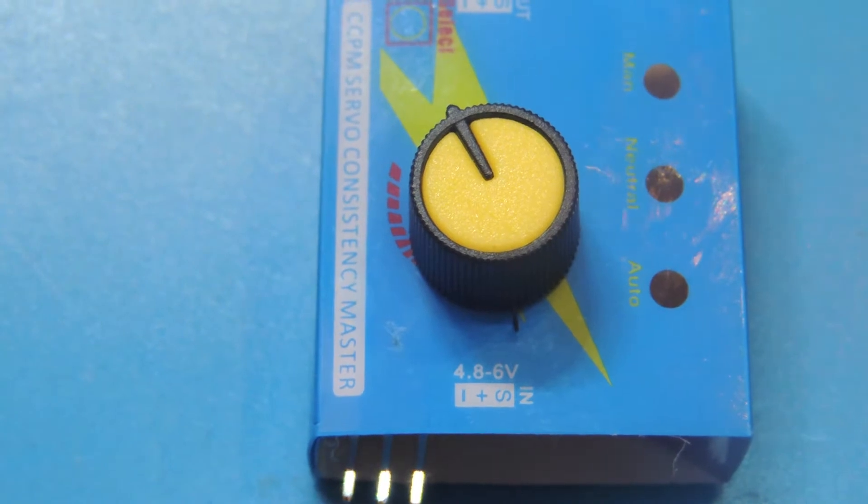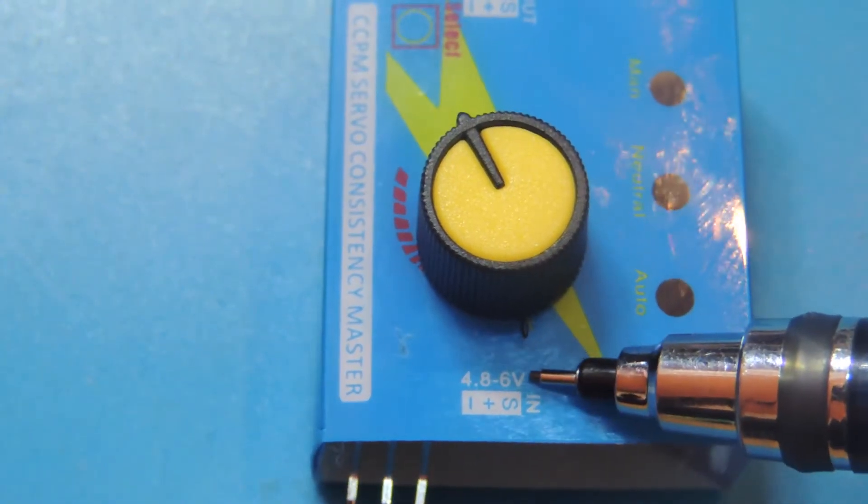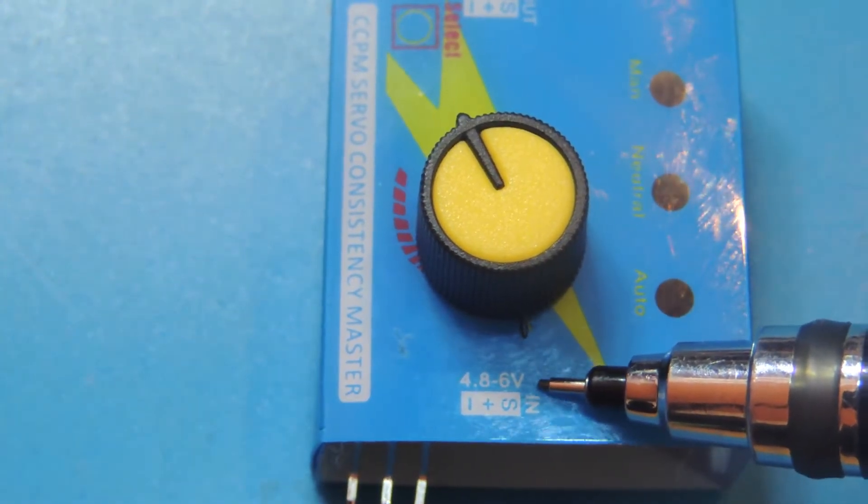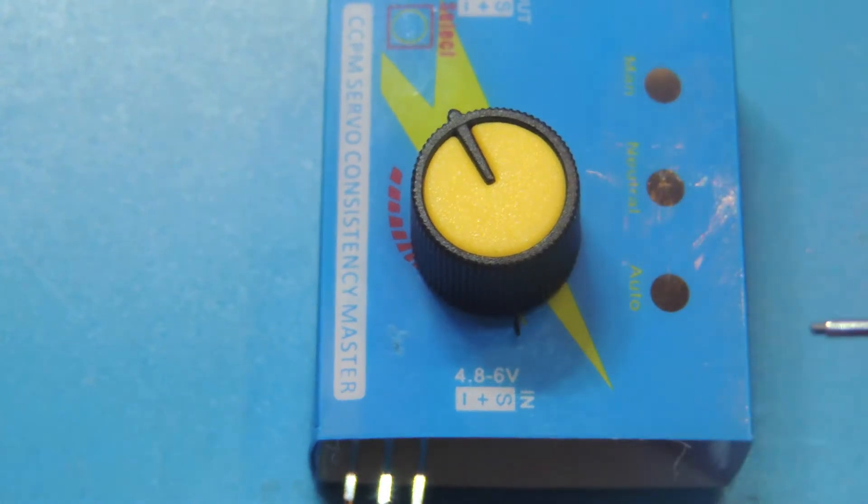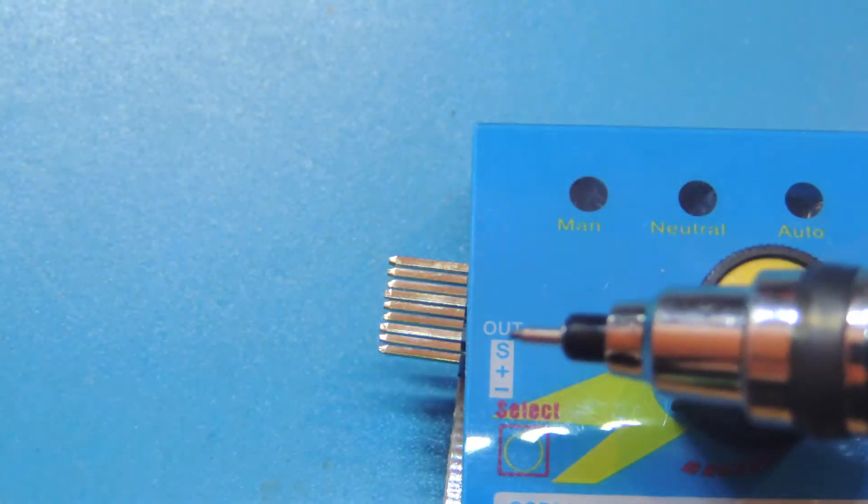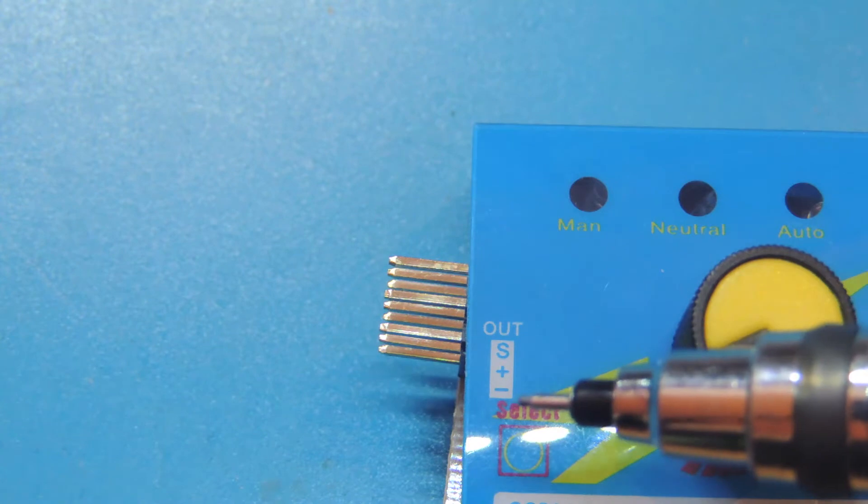On this side we provide power to the board. As you can see, we can provide between 4.8 and 6 volts. On the other side, we have our output: signal, positive, and negative.